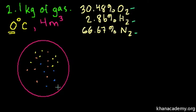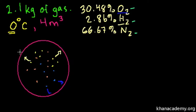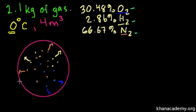You can imagine that if this is the container and each of these are the three types of gases, some of the pressure is going to be from the blue gas — maybe oxygen is the blue gas — bumping into the walls. Some of the pressure is going to be from the hydrogen bumping into the walls, maybe those are the yellow gas particles. And some of the pressure is going to be from the nitrogen bumping into the walls — let's say that's the brown gas. So the partial pressure due to nitrogen is just the pressure from those brown particles bumping into the walls.